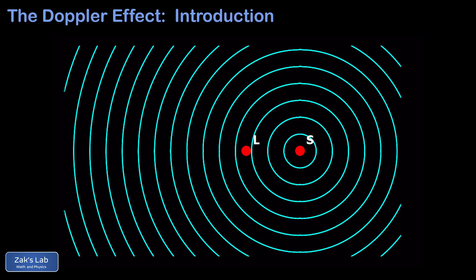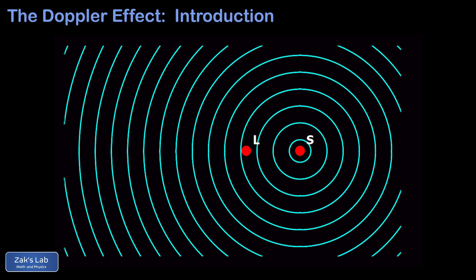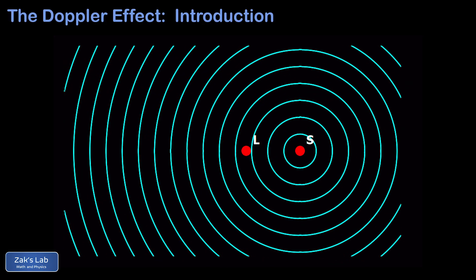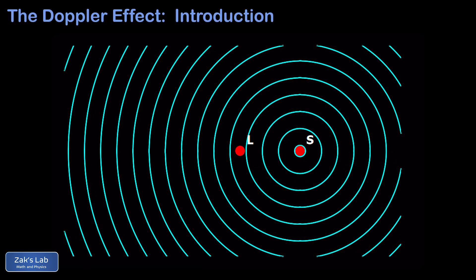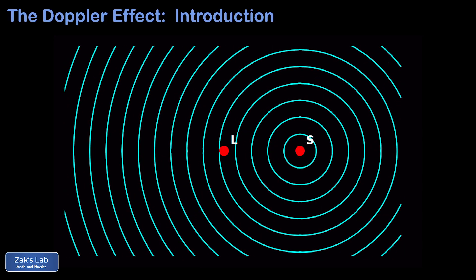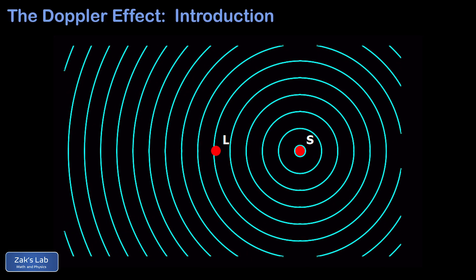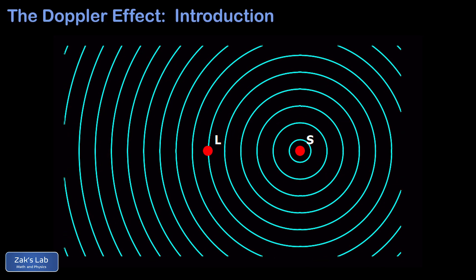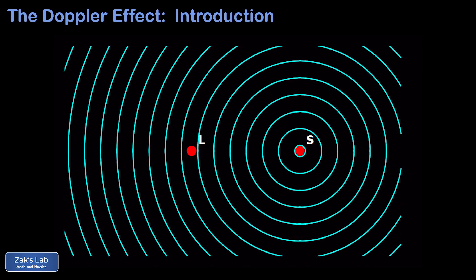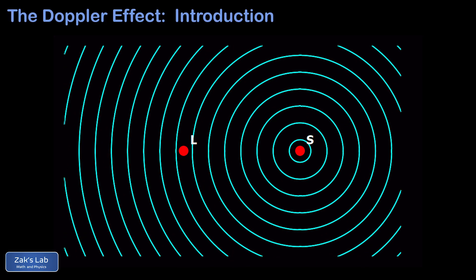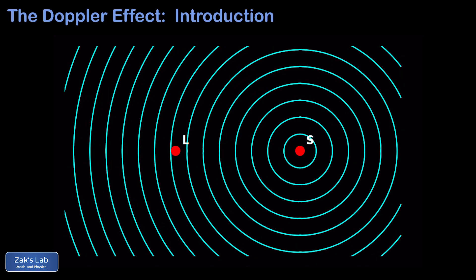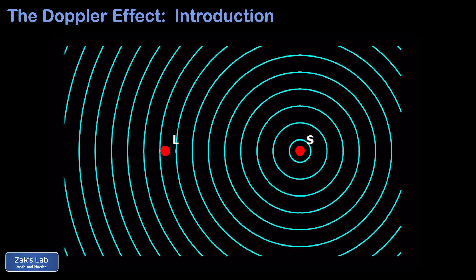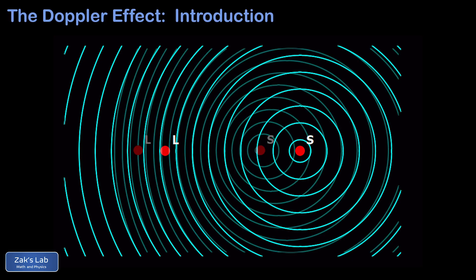The listener pauses for a bit and we're back to 400Hz. Finally, while moving away from the source, the wave fronts hit the listener at a slower pace, leading to a lower perceived frequency of 380Hz. This phenomenon is what we'll call the moving listener case of the Doppler effect in this video.